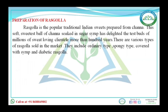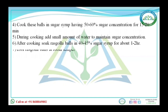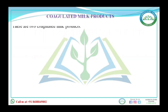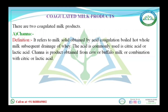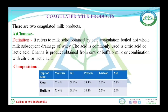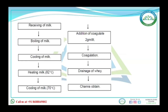Rasgulla is a traditional Indian sweet prepared from chenna — it is a soft sweet ball of chenna soaked in sugar syrup. Chenna refers to the milk solids obtained by acid coagulation of hot whole milk followed by drainage of whey; the acid commonly used is citric acid or lactic acid. Cow milk chenna composition: 53.4% moisture, 24.8% fat, 13.4% protein, 2.1% lactose, 2.1% ash. Buffalo milk chenna: 51.6% moisture, 29.6% fat, 14.4% protein, 2.3% lactose, 2.0% ash.